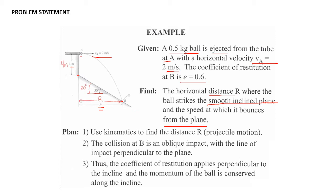Our plan of attack: we'll use kinematics to find distance R from projectile motion, then treat the collision at B as an oblique impact with the line of impact perpendicular to the plane. The coefficient of restitution applies perpendicular to the incline, and the momentum of the ball is conserved along the incline.